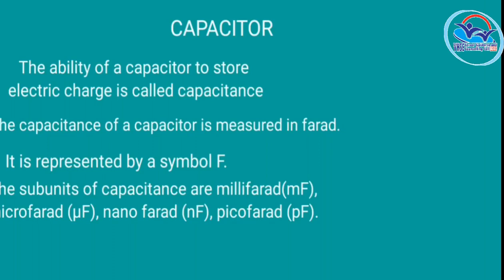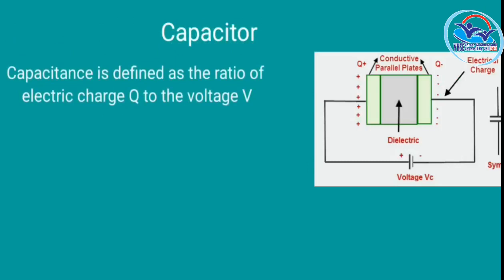The units of capacitance are millifarad, microfarad, nanofarad, and picofarad. Capacitance is defined as the ratio of electric charge Q to the voltage V. A capacitor has positive charge and negative charge applied across it, where Q is the charge and V is the voltage.